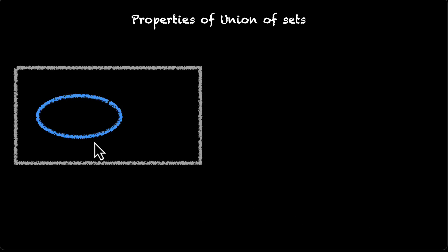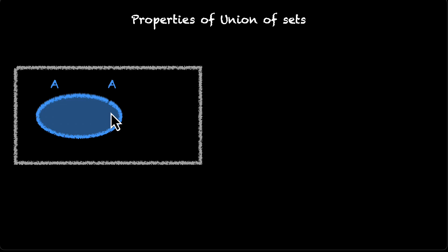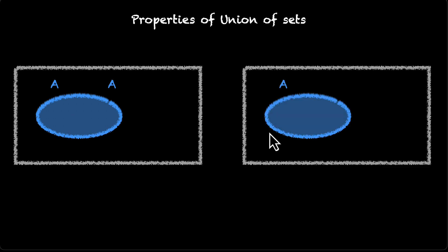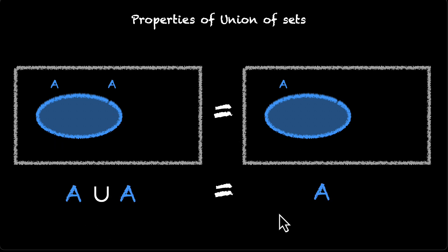Let's keep going. You have the universe, and then you have A and another A — basically A on top of A, a copy of A — and you find the union of both sets. Everything in this blue region combined with everything in this blue region gives you the same blue region. So A union A is equal to A, and this is called the idempotent law.